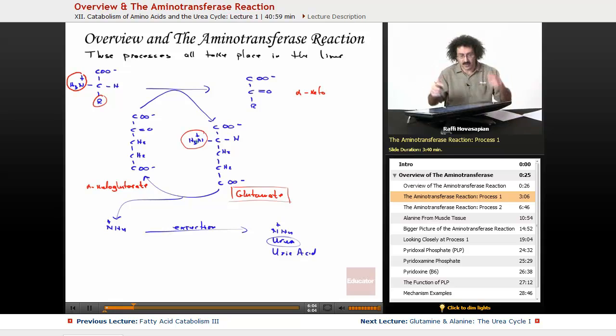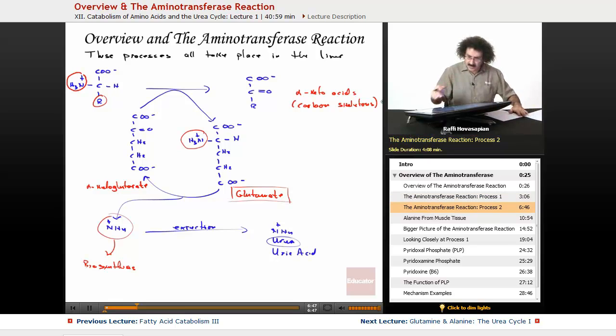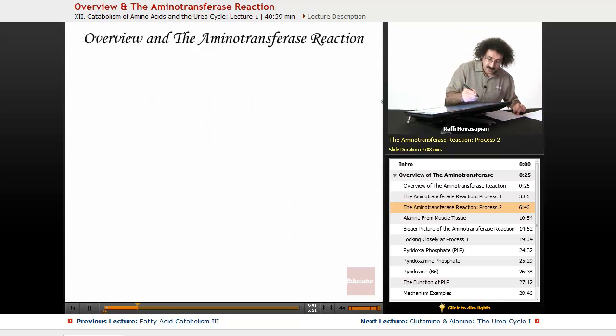In the process of going from glutamate back to alpha ketoglutarate, this amino group is released as NH4. Now, some of this is used for biosynthesis, and the rest is excreted. It enters the urea cycle, which we'll discuss in a little bit. So these alpha keto acids, they are the carbon skeletons that are left over from amino acids that transfer their amino group to alpha ketoglutarate to form glutamate. So that's one of the processes that takes place.